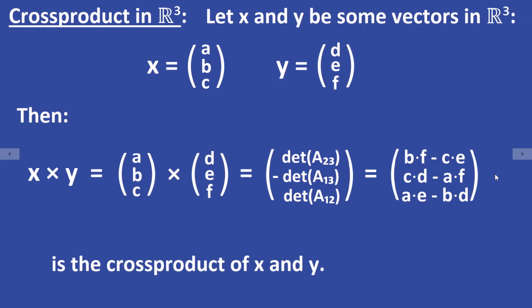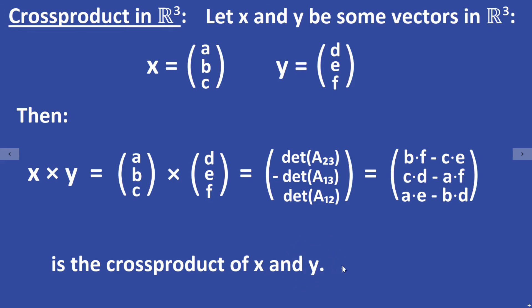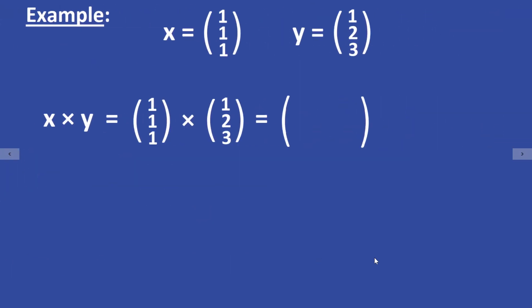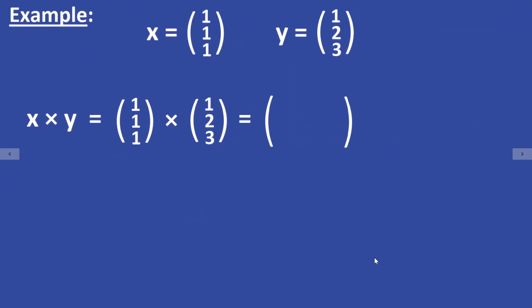This vector is called the cross product of X and Y. Before I show you some basic properties, we will take a look at an example. X is equal to the vector (1, 1, 1) and Y is equal to the vector (1, 2, 3). We are going to compute the cross product of X and Y.